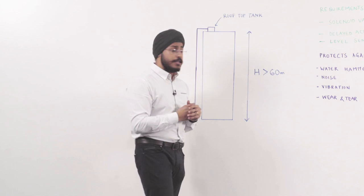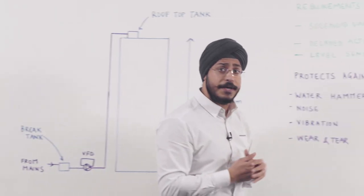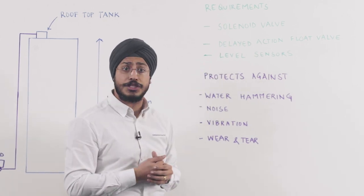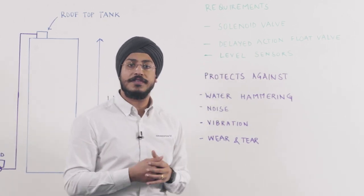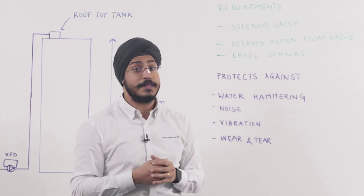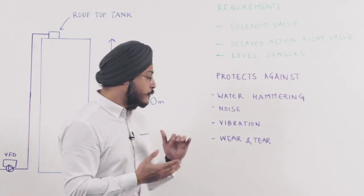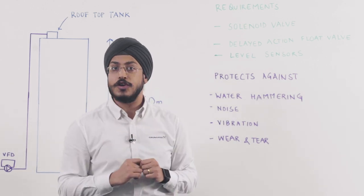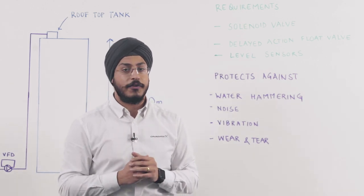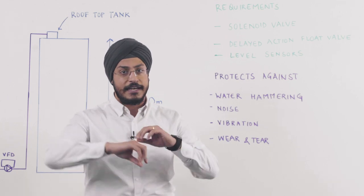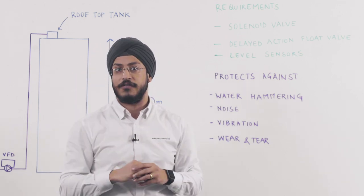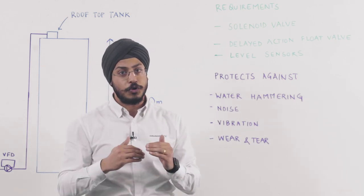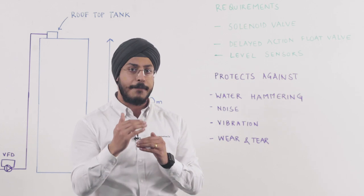In this case, in the rooftop tank, there are some additional requirements. We need to use solenoid valves or delayed action float valves. These valves help create a pressure drop in this line because in this case, the pressure boosting system will work on a pressure control, not on a level control. Which means that when the line starts to empty because of the opening of this valve, the pressure in the line will drop, indicating the pump to increase its speed and ramp up slowly.